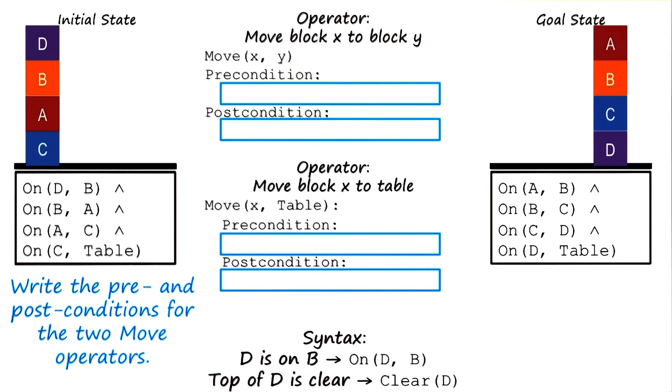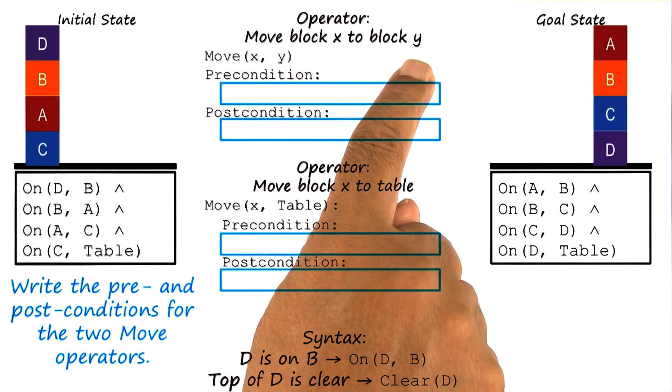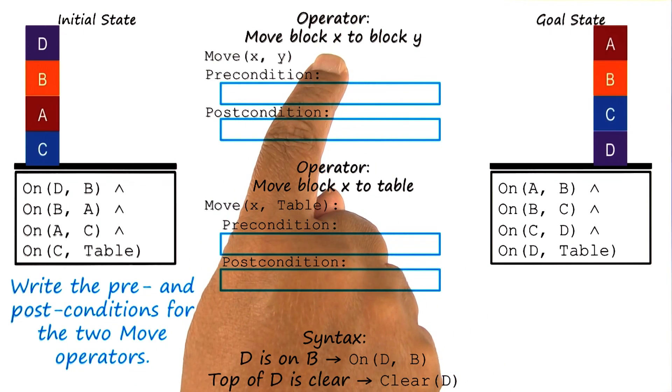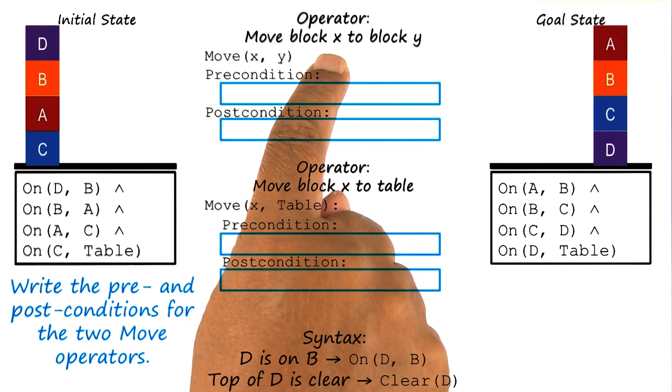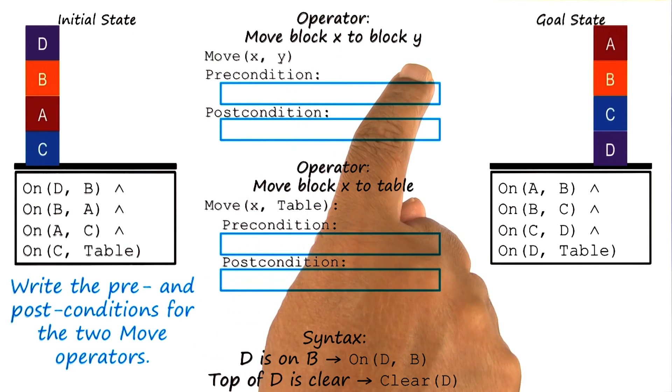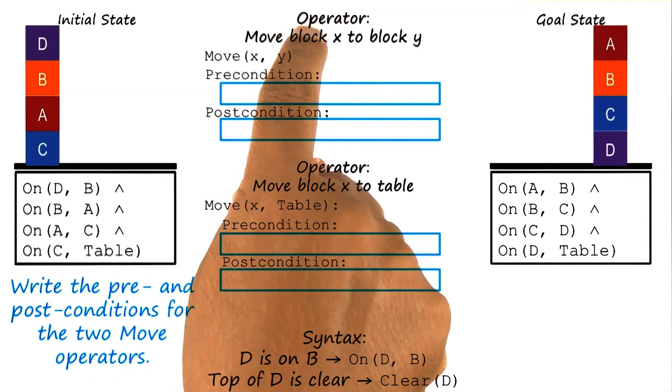Note two things. First, instead of saying block A and block B, we have variabilized them: move block X to block Y, where X could be A, B, C, or D, and similarly for block Y. And this is just a more concise notation.